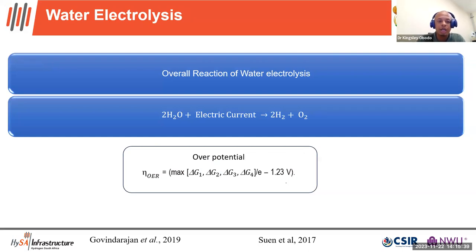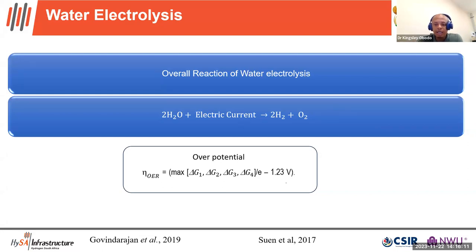The overall reaction for water electrolysis involves splitting water using electric current, giving two molecules of hydrogen and one molecule of oxygen. The big barrier is the overpotential for the reaction to proceed. The overpotential can be calculated as the maximum of the Gibbs free energy steps, and this is the principal source of inefficiency in the anode reactions, attributed mainly to the high overpotential of this oxygen evolution reaction.